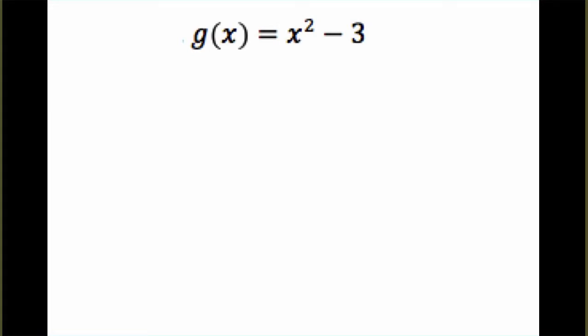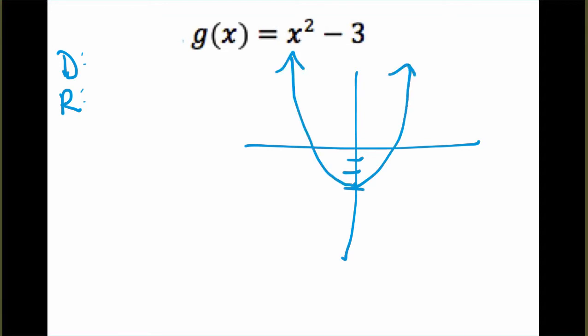Our second example is g(x) equals x squared minus 3. I want us to start out by finding the domain and range. If you want, pause it, type it into your graphing calculator, and we'll take a look at it. Here, I'm just using my ideas of transformations to get a rough sketch. If you look at this, we have an issue. If I were to draw a horizontal line through this graph, it hits the graph twice, which means it is not a one-to-one function.